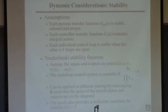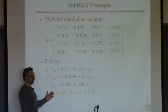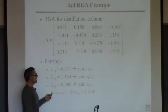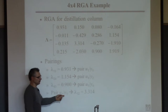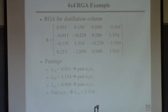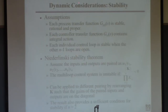This tells us if our controller pairing should work based on all steady-state considerations. The whole procedure is trying to minimize interactions between the controllers — we're picking U's and Y's and pairing them so interactions are as small as possible as measured by the RGA. These numbers being close to 1 is the best idea we have of when controllers interact and when they don't. But it completely ignores dynamics.